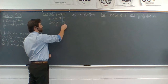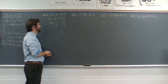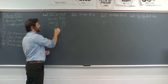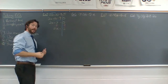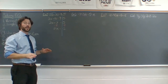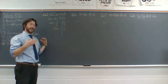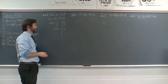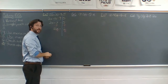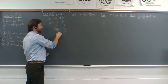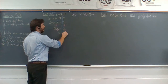We'll start by subtracting 7 from each side. On the left side, 7 minus 7 gives me 0, so I have 2x plus 0, which is just 2x. On the right side, 5 minus 7 is negative 2. Remember, we can do whatever we want to an equation as long as we do the same thing on both sides. So I can subtract that 7 from both sides and that will keep the equation balanced. Now that x is still being multiplied by 2, so we're going to divide both sides by 2. 2 divided by 2 is 1, so I have 1 times x or just x. And negative 2 divided by 2 gives me negative 1.